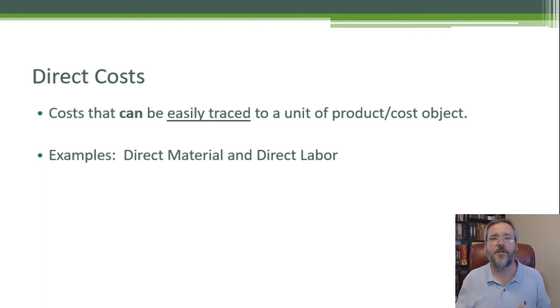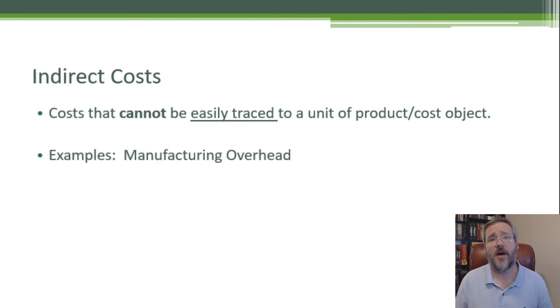Those are our direct costs - costs that we can look at the product and say yes, I see a car body, I see four wheels, and I see a time ticket where someone had to put those together. Indirect costs are costs that cannot be easily traced to a single unit of product.